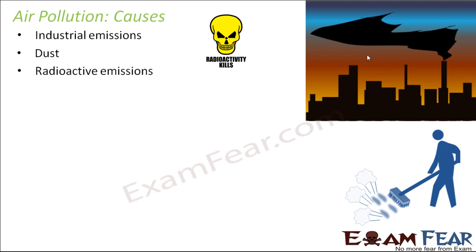Radioactive emissions are another cause. During the process of radioactivity, extremely strong radiations come out of radioactive elements. This radioactive decay occurs within the crust of the earth. Gases like radon are produced, and these gases are extremely harmful — so harmful that they can even cause diseases like lung cancer. Moreover, since radioactivity is a long-term process that keeps taking place year after year, these radioactive emissions always have long-term effects.